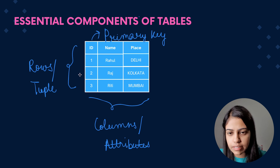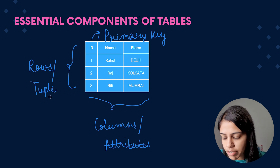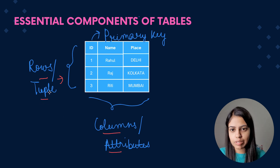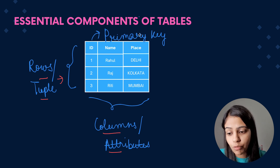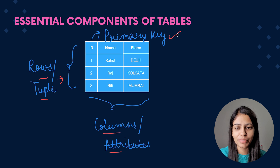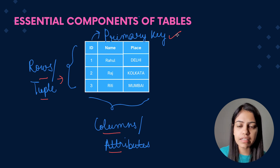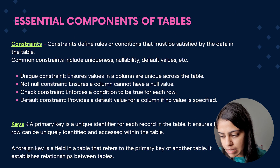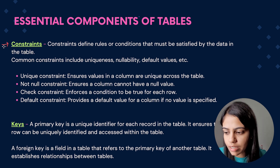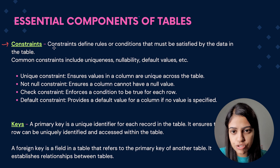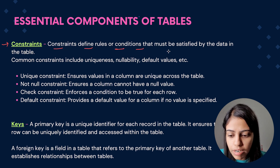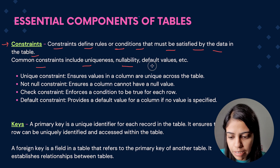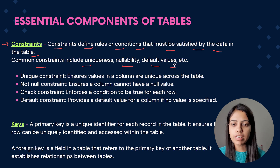Now, here is a reference table. You can see these are all the rows or tuples, and these are all the columns or attributes. We now have a clear understanding of rows and columns. But what is this term 'primary key'? Primary key is something which uniquely identifies records in the table. But first let's look at constraints, and then we will come to keys. Constraints define rules or conditions that must be satisfied by the data in the table. Common constraints include uniqueness, nullability, default values, and more.